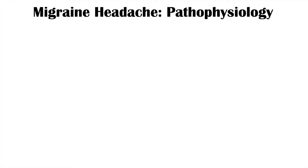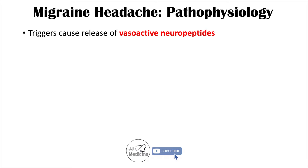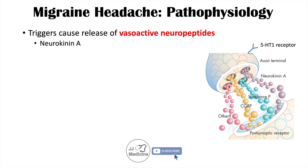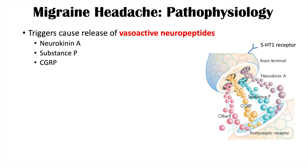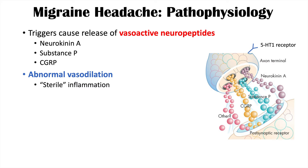Now let's talk about the pathophysiology behind a migraine headache. Triggers like chocolate and monosodium glutamate cause the release of vasoactive neuropeptides, including neurokinin A, substance P, and CGRP. This leads to abnormal vasodilation, which is believed to underlie the migraine. There may also be underlying sterile inflammation, as well as trigeminal nerve activation and a pain response due to that activation.